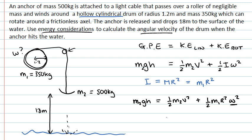And that relationship is that the linear velocity V will equal omega R, the angular velocity multiplied by the radius.